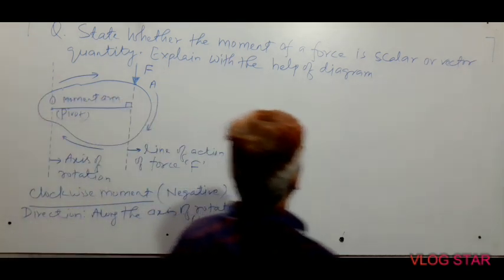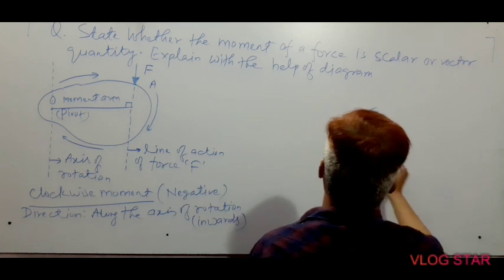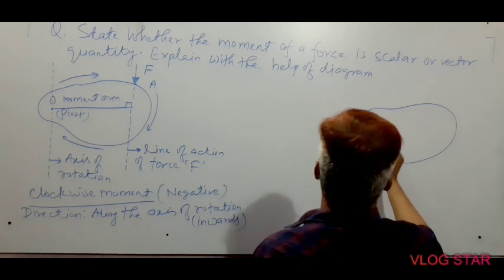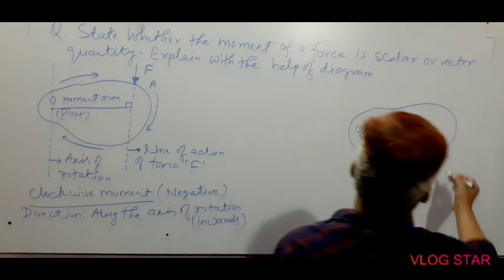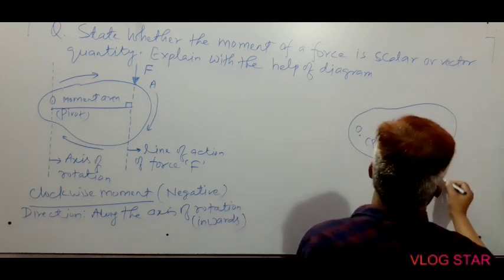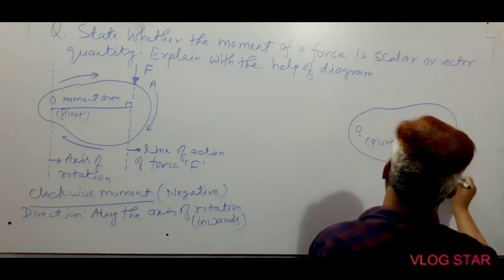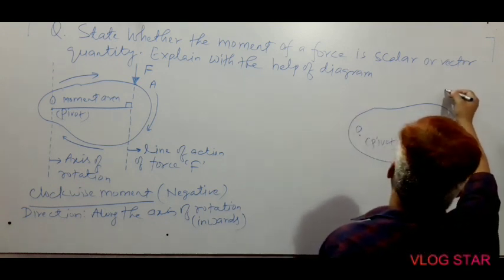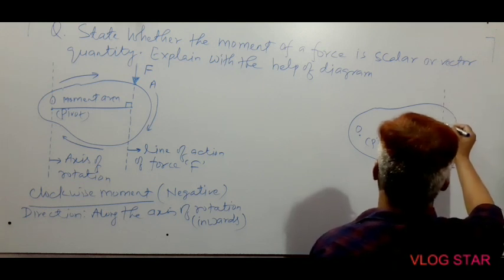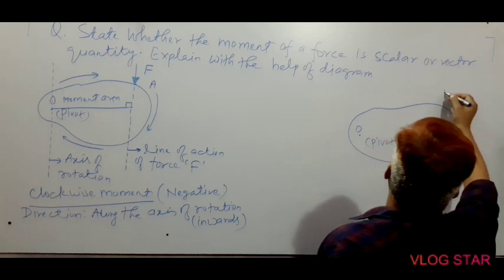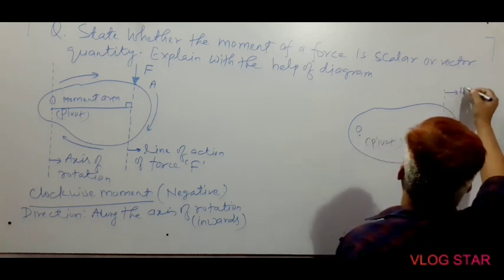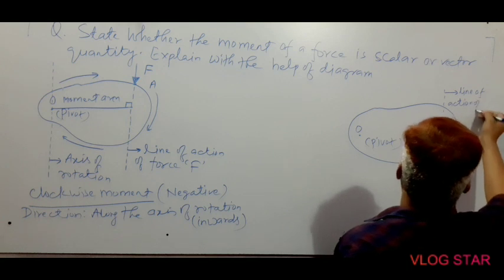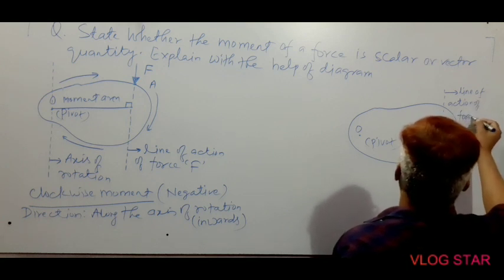On the other hand, if we take the same object — the same rigid stationary pivoted object — and O is the pivot, and a force is acting in the upward direction, the magnitude of force is F, and A is the point of application. The direction means the force will be applied in this direction. This is the line of action of force F.